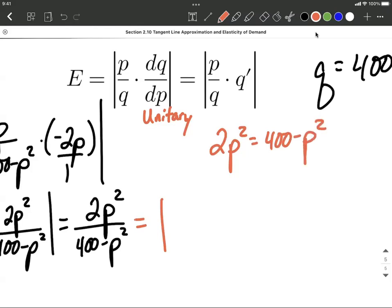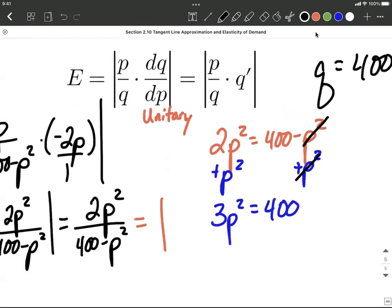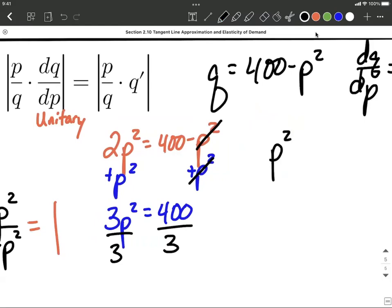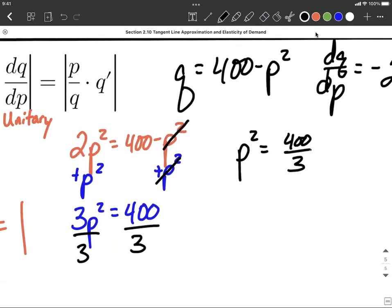Now the rest of the solving shouldn't be too bad. We want to get all the p's on one side, so let's add p squared to both sides. 2p squared plus another p squared makes 3p squared equals 400 on the right-hand side. I'd still like to isolate the p squared, so I'd like to get rid of that 3 out in front, so let's divide both sides by 3. This will make it into a power equation where we have p squared equals 400 divided by 3.